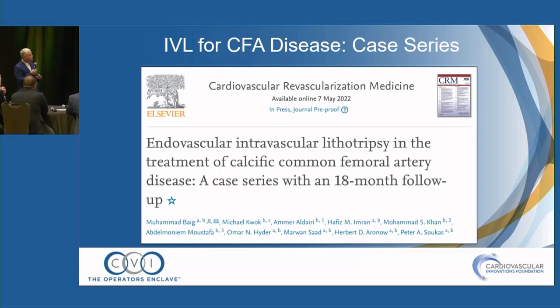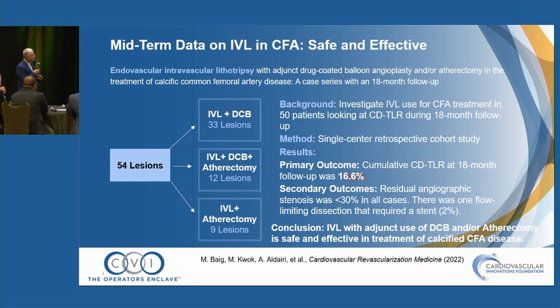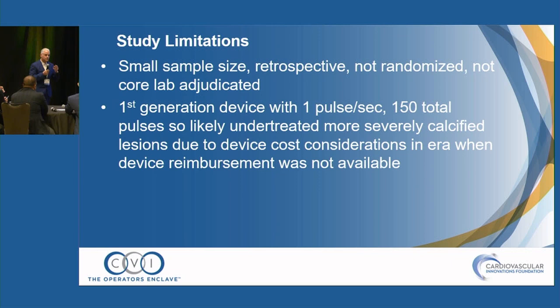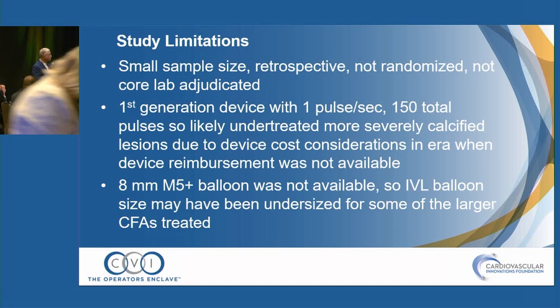We published a paper in CRM where we used combinations of IVL and DCB, IVL, DCB, and atherectomy, as well as IVL and atherectomy. We had an 18-month cumulative TLR rate of about 16% — very safe and very effective near term. The study was limited by small population size, retrospective design, not randomized, and not core lab adjudicated. This was using the first-generation device with 150 pulses, and we weren't getting reimbursed for IVL, so we were under pressure not to use this expensive balloon. We also didn't have the 8mm or L6 devices, so we were probably a little undersized.